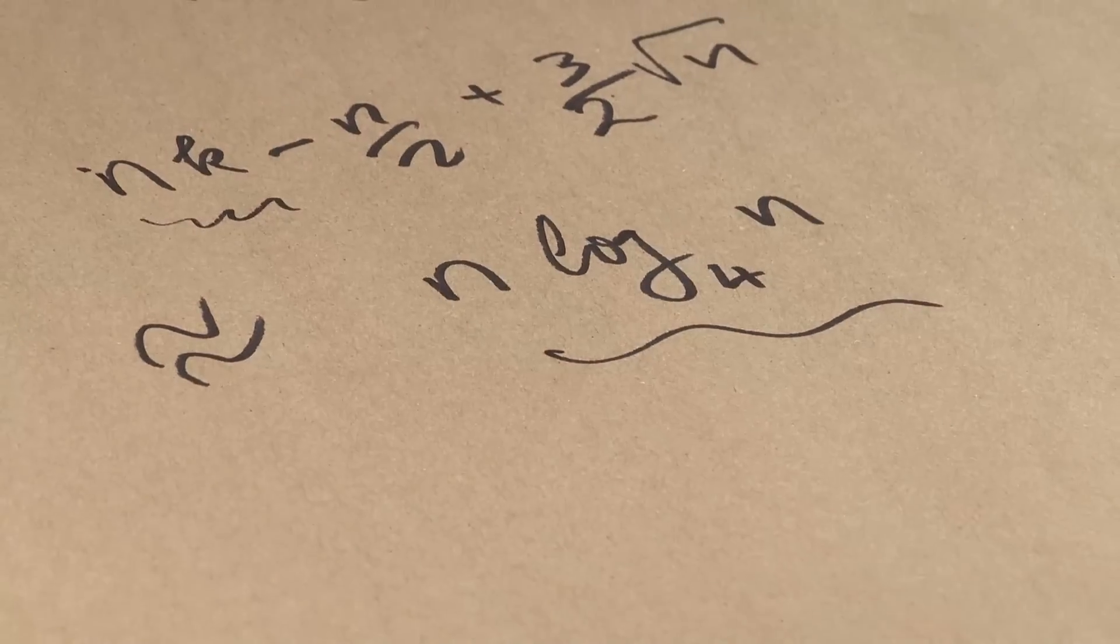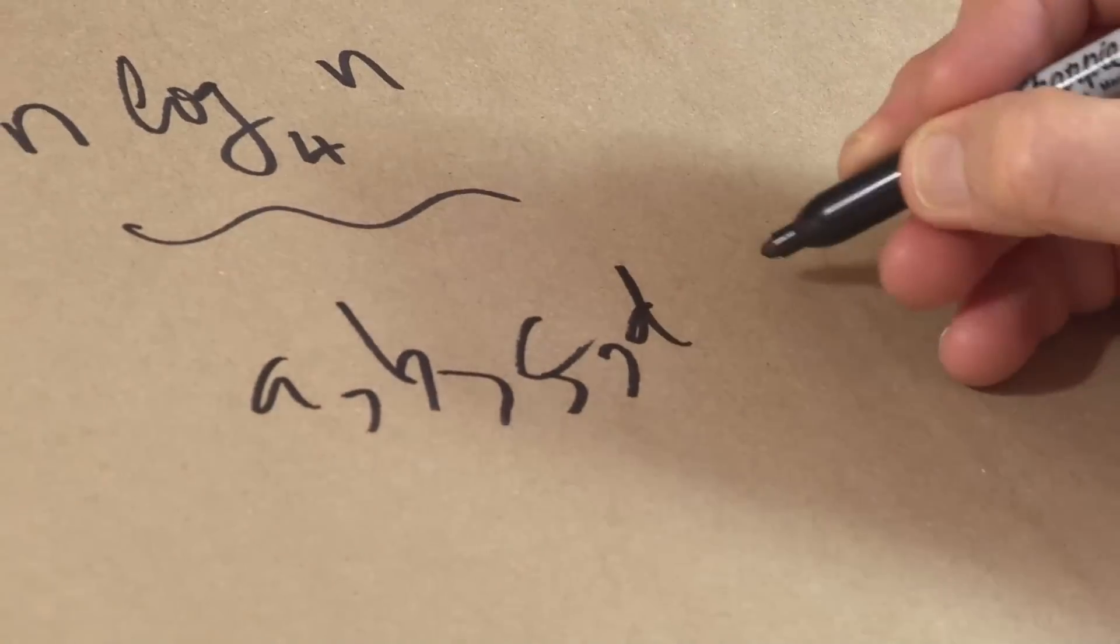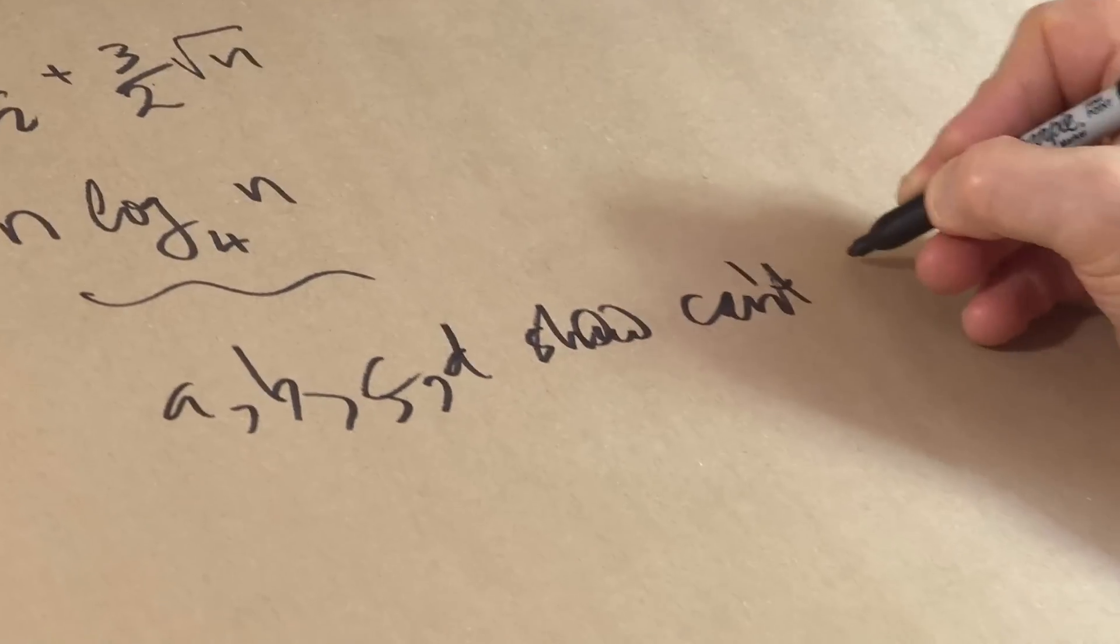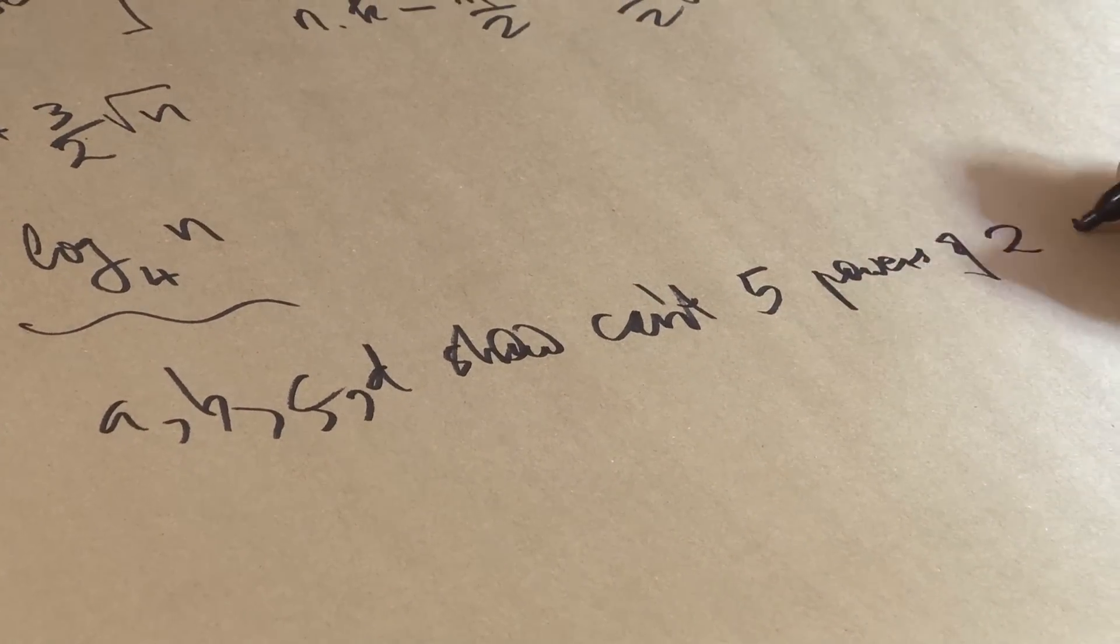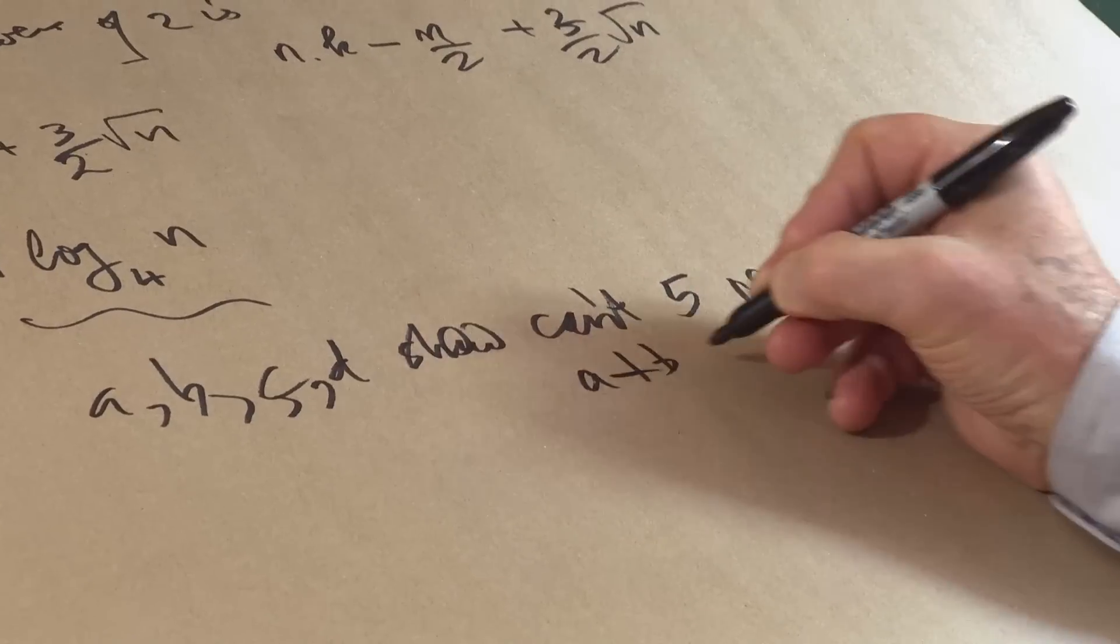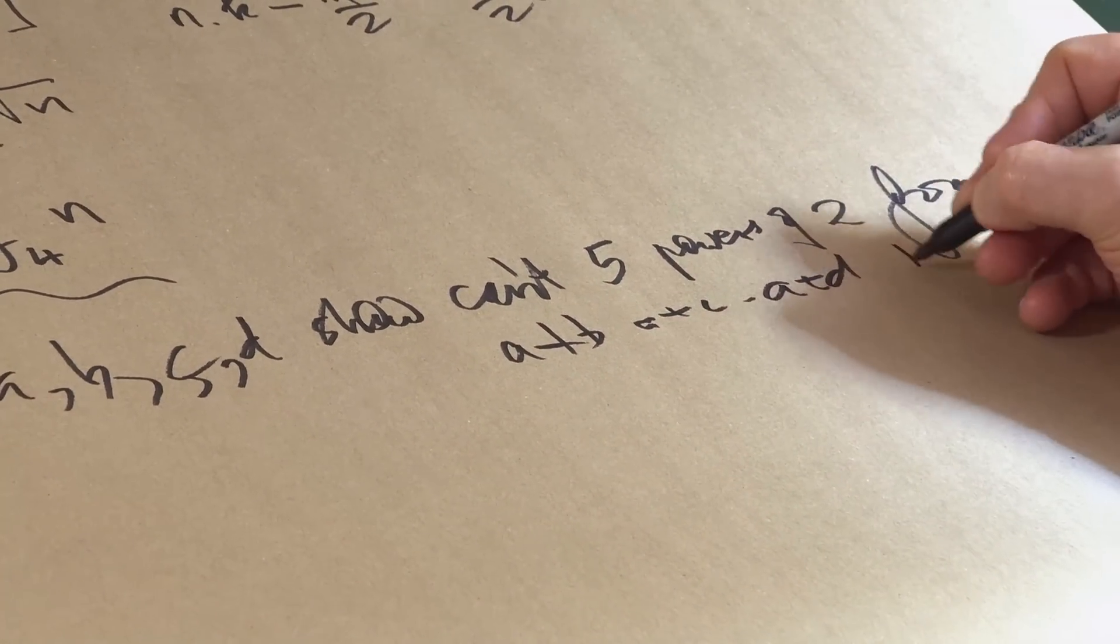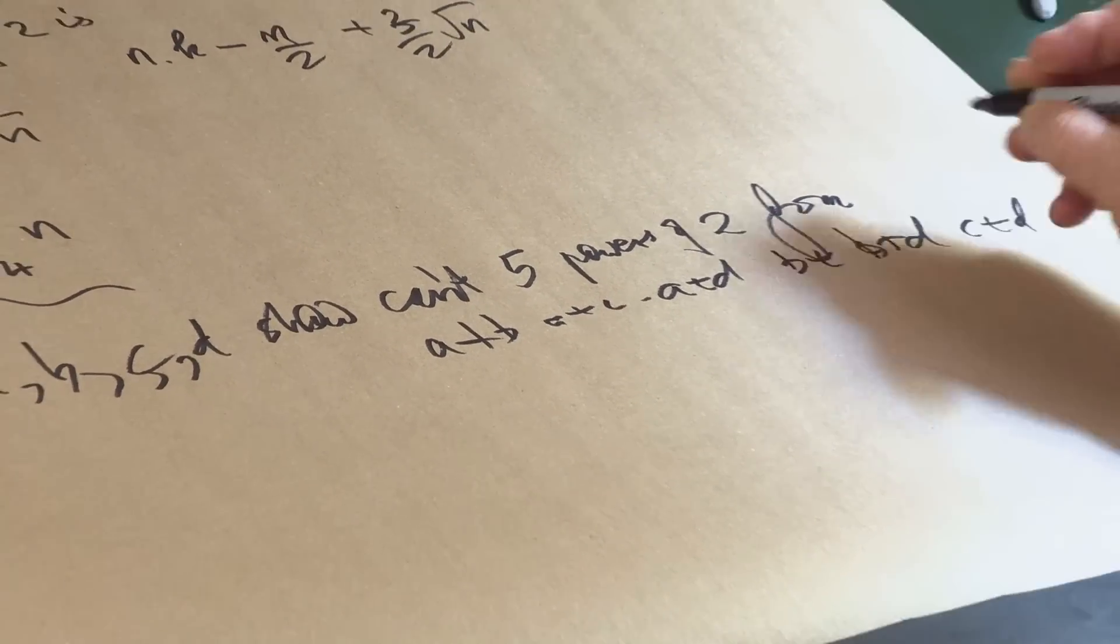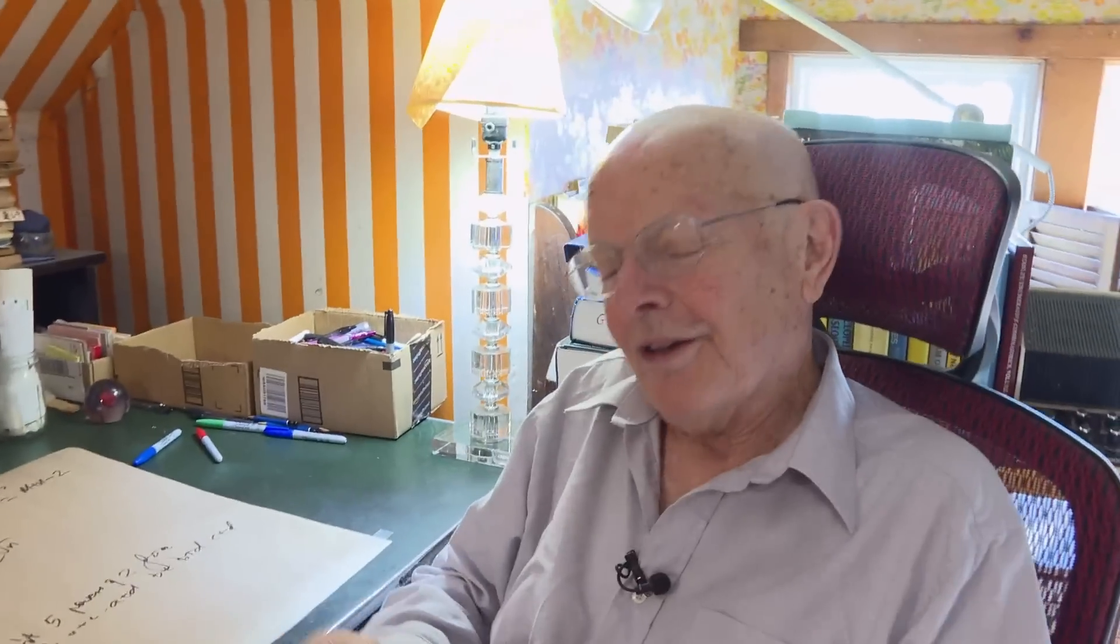And in particular, if you have four numbers, a, b, c, d, show you can't get 5 powers of 2 from a plus b, a plus c, a plus d, b plus c, b plus d, c plus d. Six numbers, can you get 5 powers of 2? No one knows.